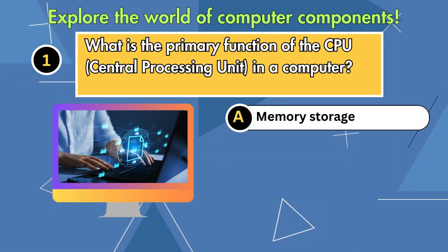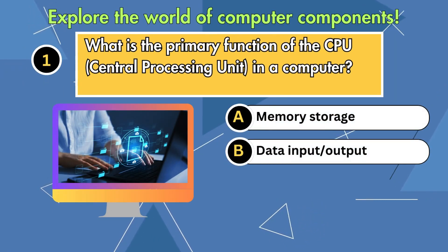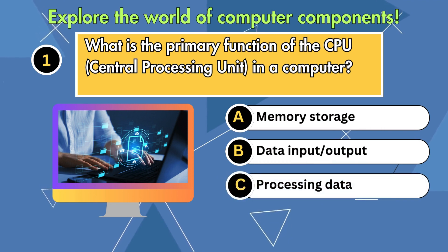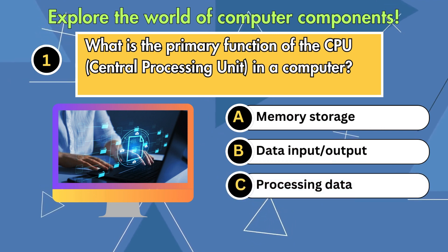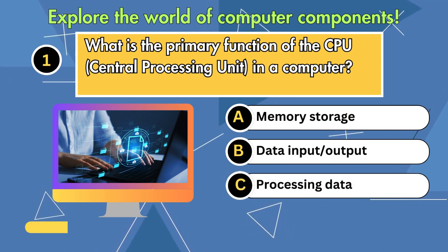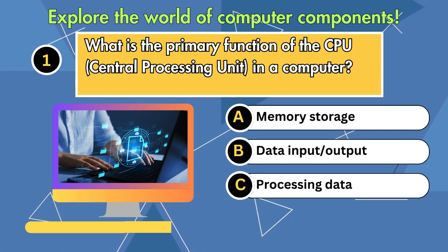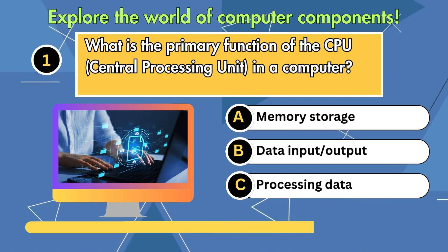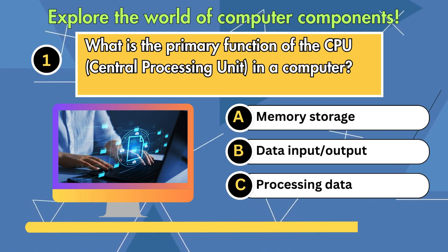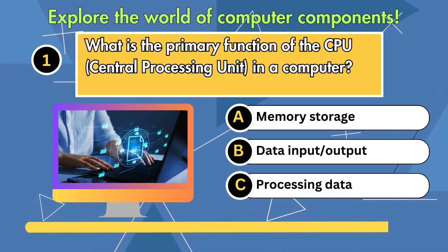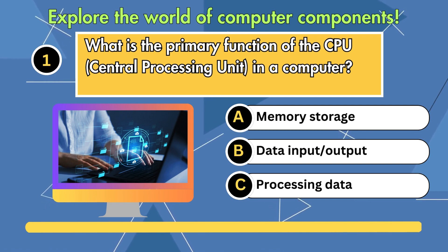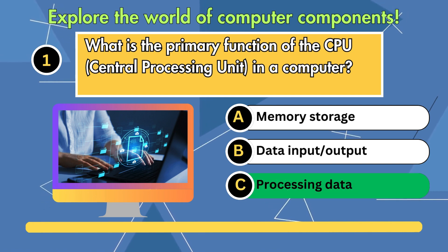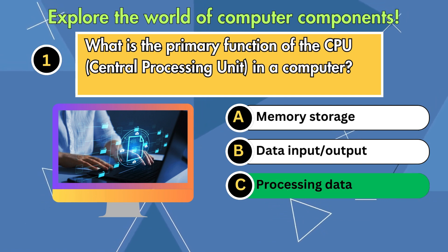Question 1. What is the primary function of the CPU in a computer? Option 1: Memory storage. Option 2: Data input/output. Option 3: Processing data. Answer is processing data.